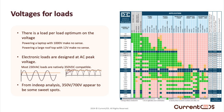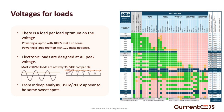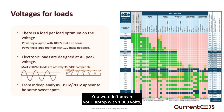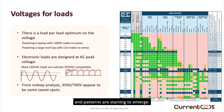The takeaway: different loads demand different voltages, and there's an optimum for each application. You wouldn't power your laptop with 1,000 volts, nor would you run a rooftop heat pump on 12 volts. It's about finding the right voltage for each use case, and patterns are starting to emerge.